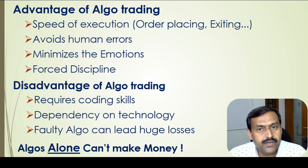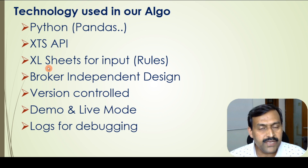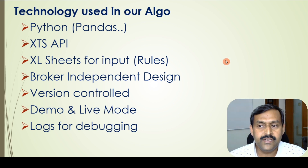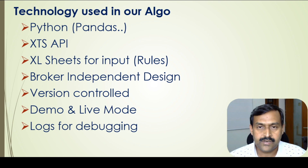Here is the system I am going to present to you. The main technology used in our algo system is Python, with a lot of pandas libraries being used. Currently it is built using the Symphony Fintech XPS APIs. To supply inputs to the algo, we use an Excel sheet — in a moment I will show how we supply inputs to the algo. The design is completely broker-independent and API-independent, so tomorrow if we have to switch to a different broker or API, with minimal effort we can modify the core algorithm. It is completely version-controlled. We have a demo mode as well as a live mode — demo mode for debugging and live mode for live trading — and it has all the required logs for easy debugging.